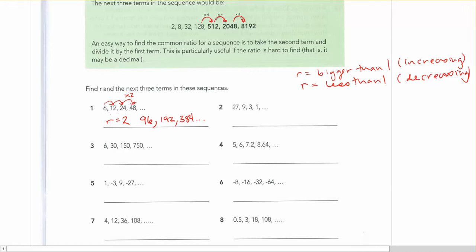So our first example here, r was equal to 2. It's bigger than 1 and you can see the sequence's getting bigger each time. Here, going from 27 to 9 to 3 to 1, we can see that this is decreasing.